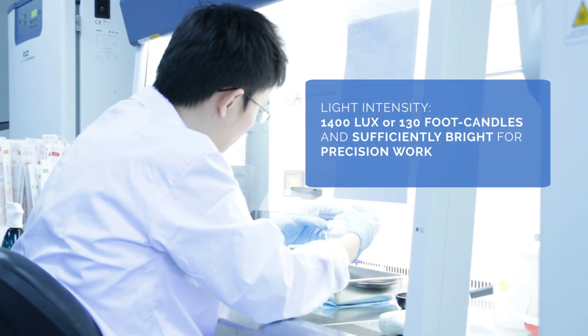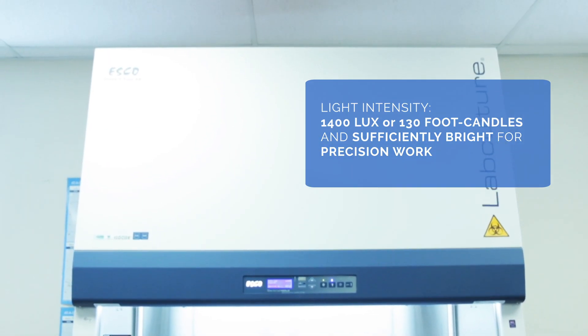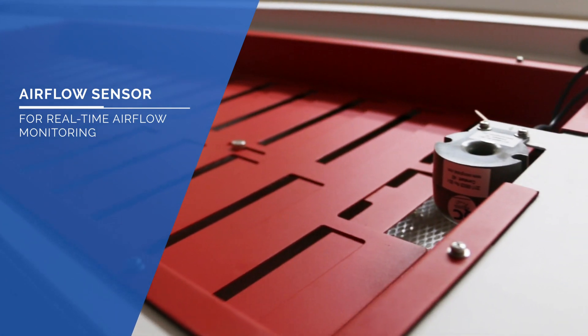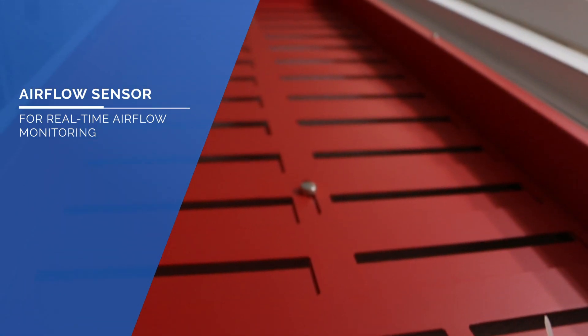There's more! Esco Biosafety Cabinet has a low noise level of 63 dBA and light intensity of greater than 1400 lux within the working area. It is also equipped with the airflow sensor in a donut housing design that monitors real-time airflow.